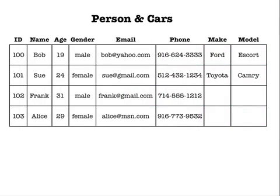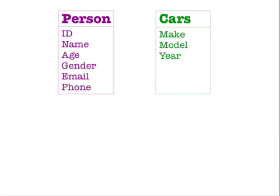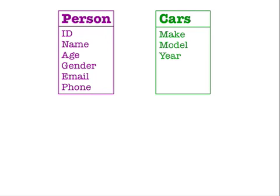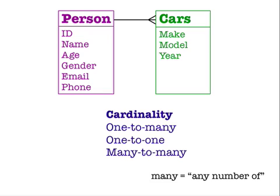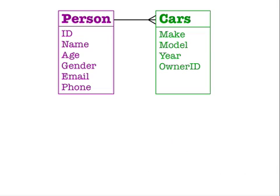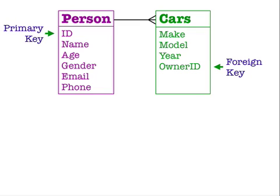Taking a step back, what we're really talking about here are two different things: people and cars. Cars are described by a set of attributes that are different from the set of attributes that describe people. Cars and people are really two separate entities. A person is described by their ID, name, age, gender, email address, and phone number. A car is described by its make, model, and year. There is now a relationship between people and cars — a person is said to own cars. We will say that the cardinality between person and car is one to many, because one person owns many cars. Many in database speak means any number of, including zero. Other cardinalities are one to one and many to many. To represent this relationship in our tables, we need to add an attribute called owner ID to the car table that establishes who owns a specific car.